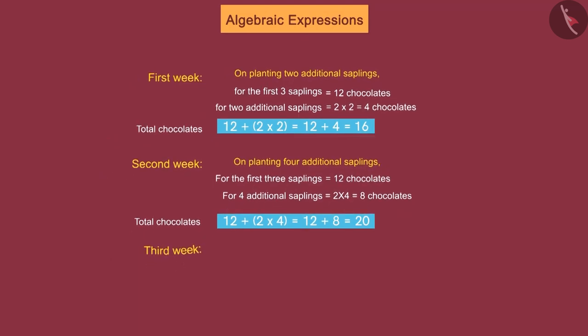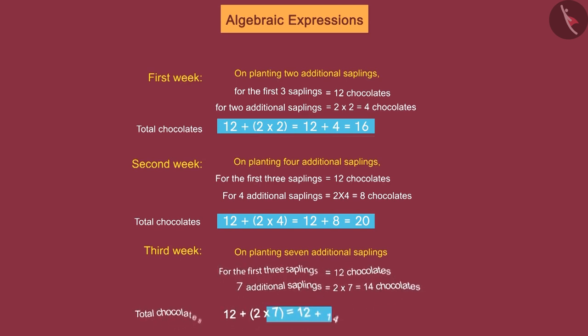What if Raghu plants seven extra saplings in the third week? He will get a total of twelve plus two times seven, which is equal to twenty-six chocolates.